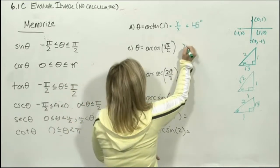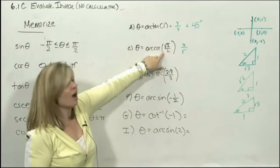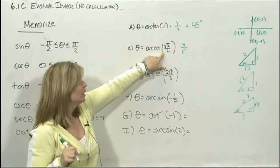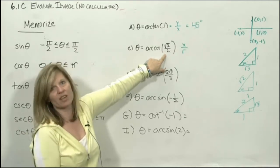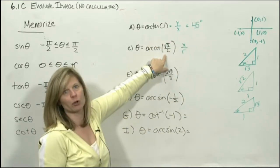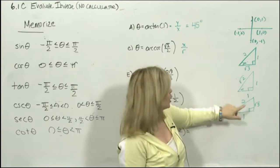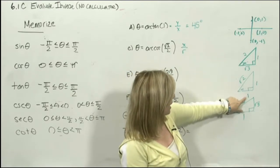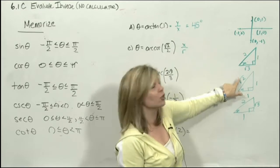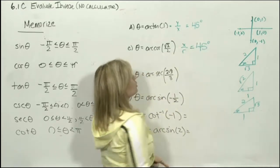For arccos(√2/2), the definition of cosine is x over r. The number is positive so the answer is in quadrant one. The only reference that gives √2/2 is the 45 triangle: x over r is 1 over √2, which equals √2/2. So this answer is 45 degrees.